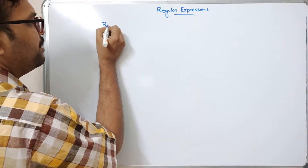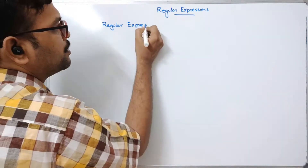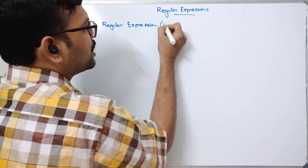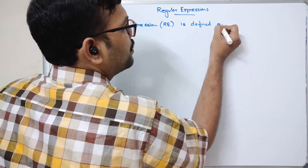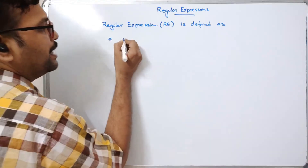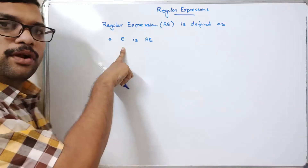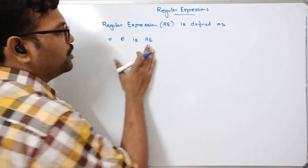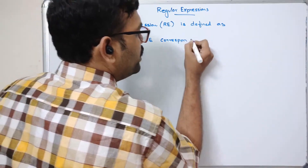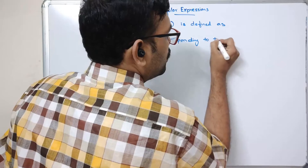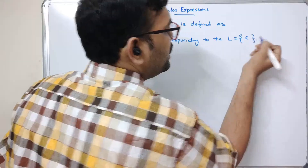A regular expression — in shortcut I will write it as RE — is defined as follows. First: epsilon is a regular expression. We know epsilon means the empty string. The regular expression corresponds to the language L equal to the set containing the empty string.